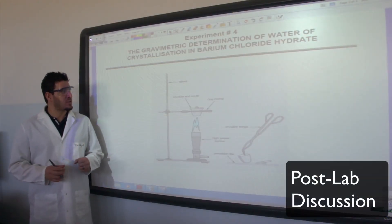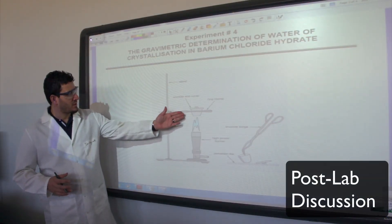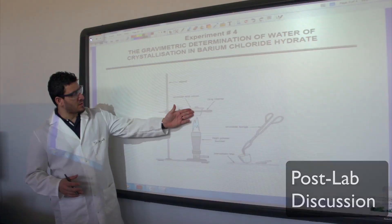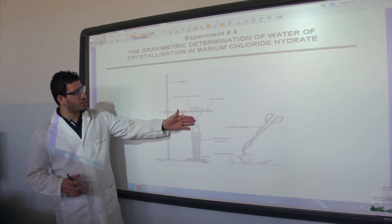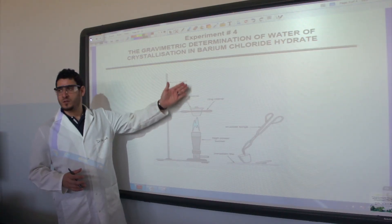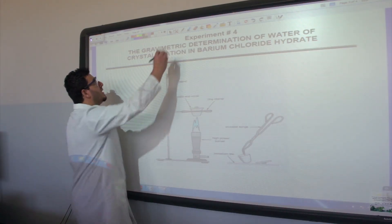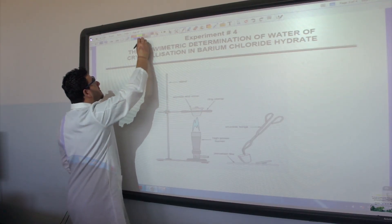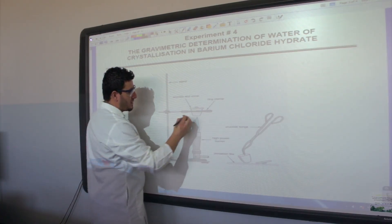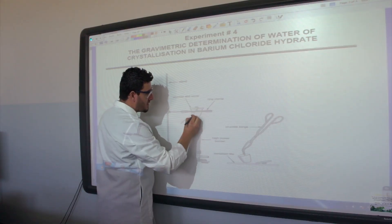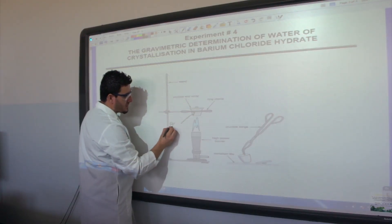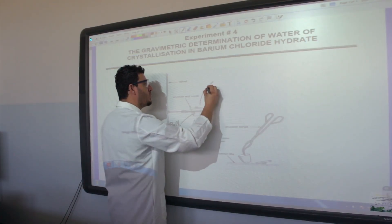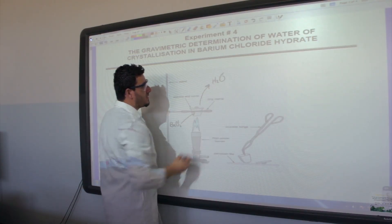Now that you have finished the experiment, basically what you did was heat the solid long enough for all the water to evaporate. The remaining solid in the crucible is the anhydrous barium chloride, and the water evaporated.